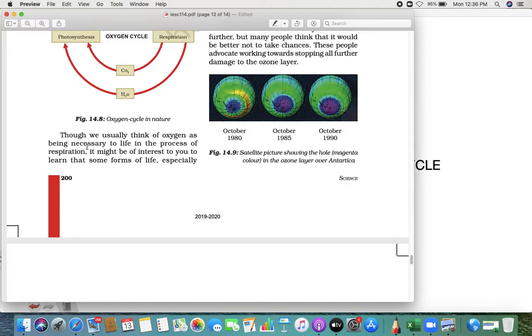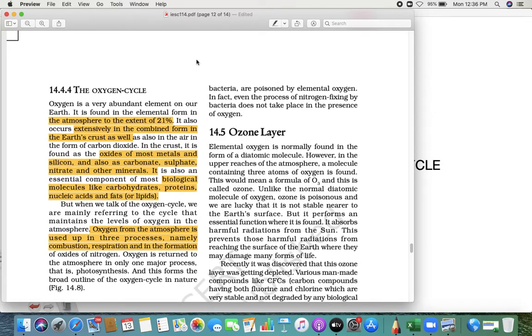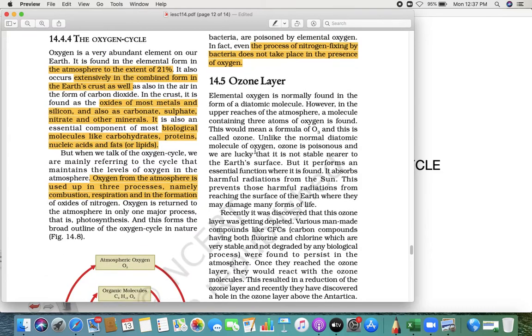There are certain bacteria poisoned by elemental oxygen. The process of nitrogen-fixing bacteria, which I told you earlier—there are bacteria which fix the atmospheric nitrogen—those bacteria cannot stay on the surface of the earth because they die in the presence of oxygen. The process of nitrogen-fixing bacteria does not take place in the presence of oxygen. So it's a very simple process of an oxygen cycle.